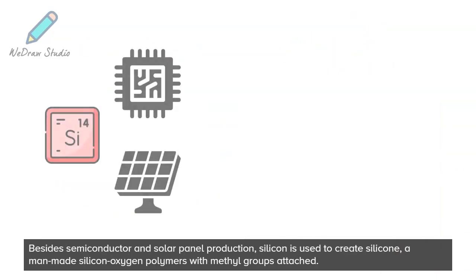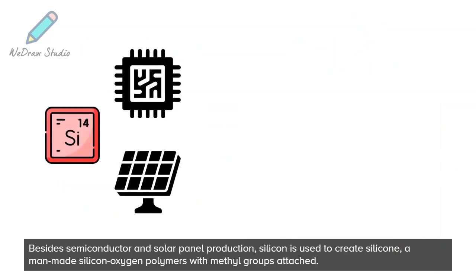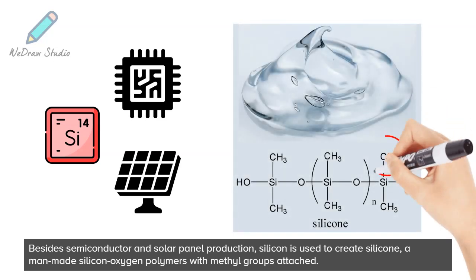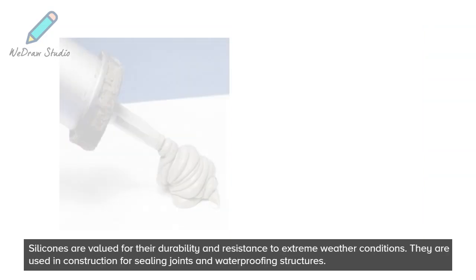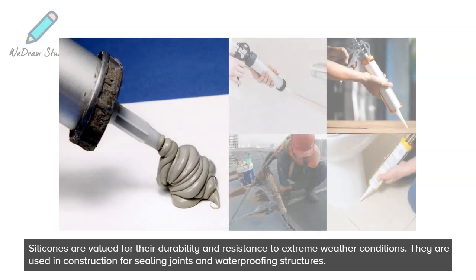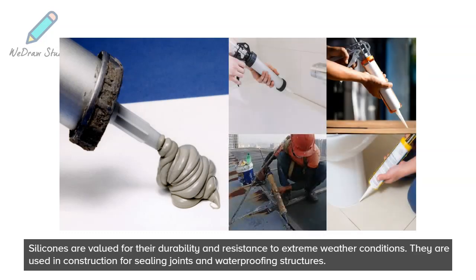Besides semiconductor and solar panel production, silicon is used to create silicone, a man-made silicon-oxygen polymer with methyl groups attached. Silicones are valued for their durability and resistance to extreme weather conditions. They are used in construction for sealing joints and waterproofing structures.